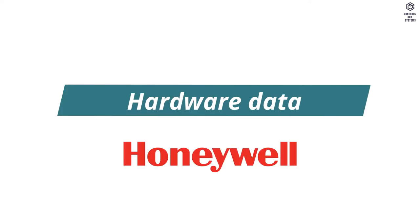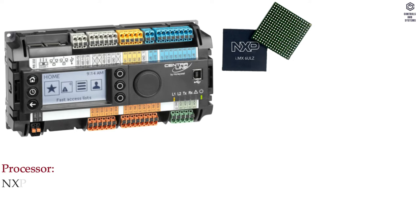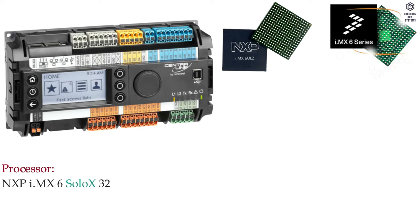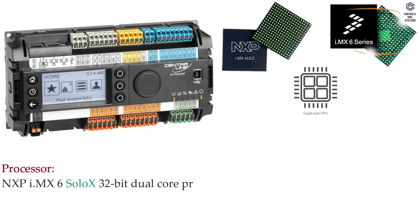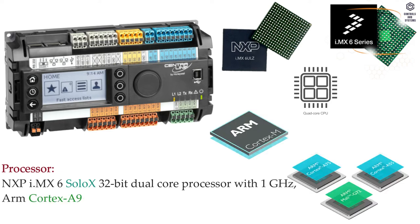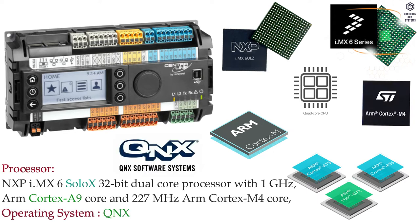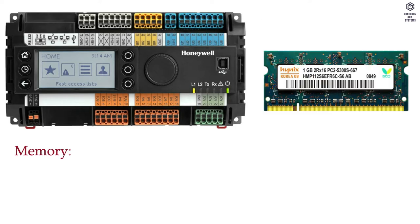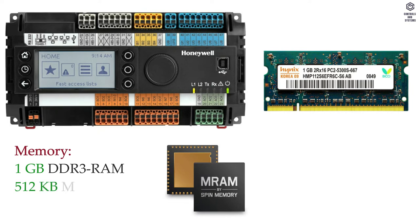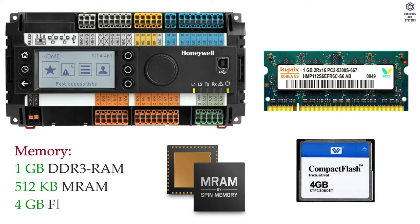Hardware data — Processor: NXP i.MX6 SoloX 32-bit dual-core processor with 1 GHz ARM Cortex-A9 core and 227 MHz ARM Cortex-M4 core. Operating system is QNX. Memory: 1 GB DDR3 RAM, 512 KB RAM, 4 GB flash memory.